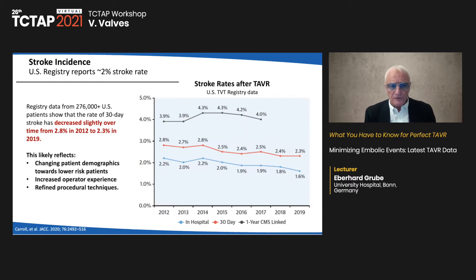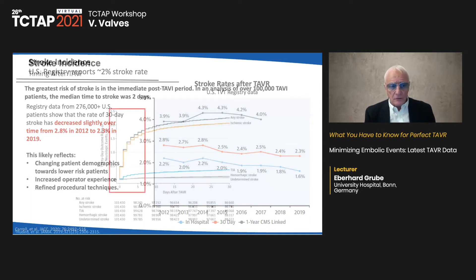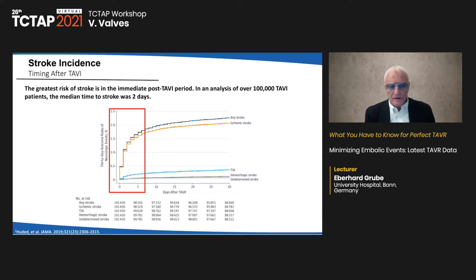The US registry reports about a 2% stroke rate, which has decreased slightly over time from 2.8% to 2.3% in 2019. This likely reflects changing patient demographics toward lower risk and increased operator experience, as well as refined procedural techniques. In an analysis of over 100,000 TAVR patients, the median time to stroke was two days — the greatest risk is in the immediate post-TAVR period.